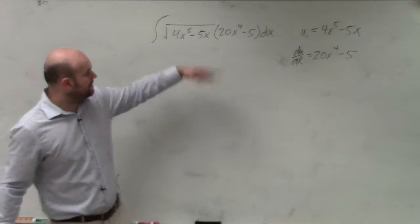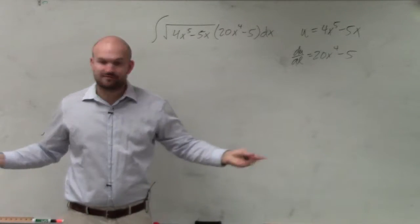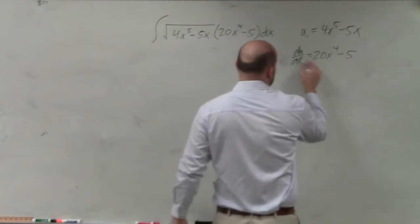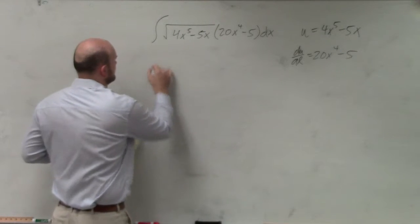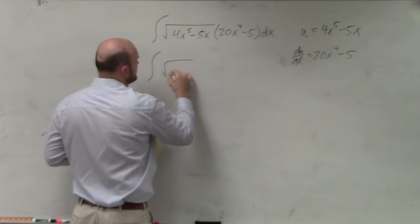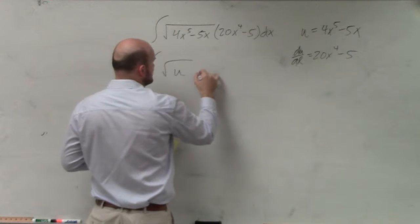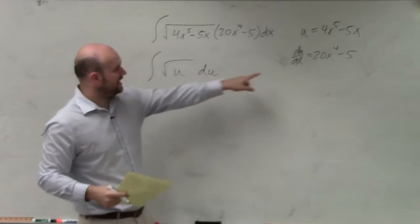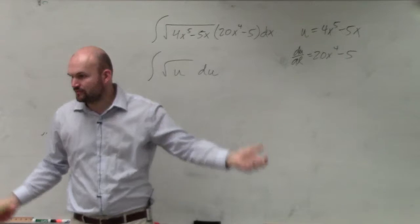And we say, okay, I'm having u times du/dx. I can definitely differentiate this. Just make sure you could also multiply by your dx right there. So really, what we have is square root of u times du, as we can multiply the dx over there, and you'd have 20x to the fourth.